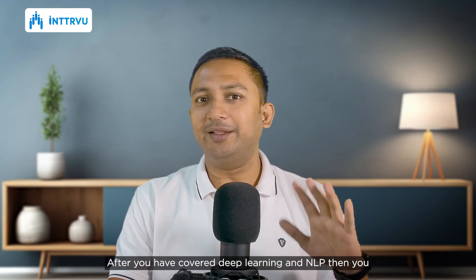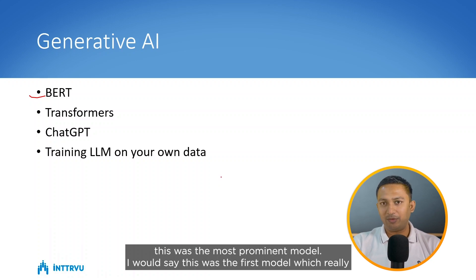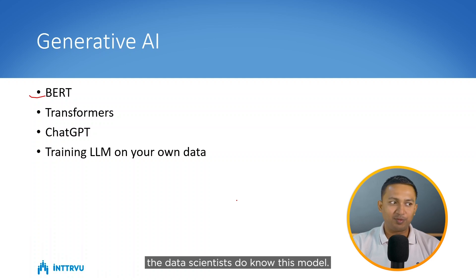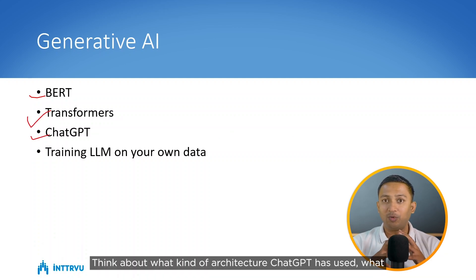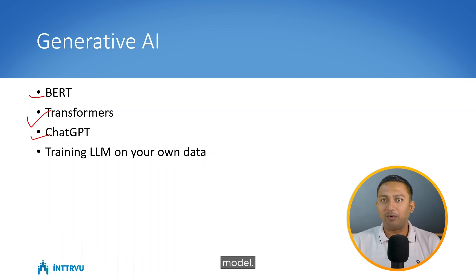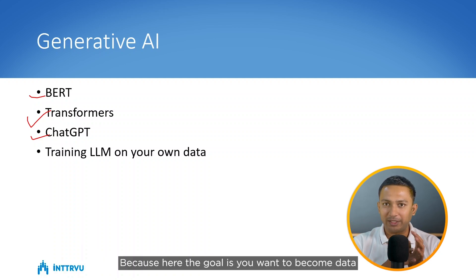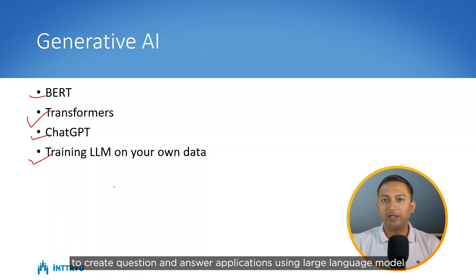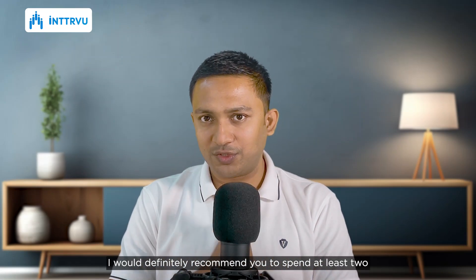After deep learning and NLP, you can start with generative AI. By this point you have a strong foundation in Python, machine learning, deep learning, and NLP. In generative AI, start with the BERT model, which was the first model that gave strong generative AI outputs. Understand what made it different from previous models, then learn the concepts of transformers, then go through ChatGPT — its architecture, the datasets used to train it. Also learn how to fine-tune large language models on your own dataset to create question-and-answer applications.